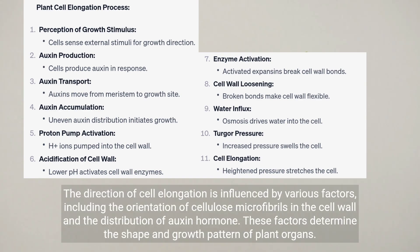The direction of cell elongation is influenced by various factors, including the orientation of cellulose microfibrils in the cell wall and the distribution of auxin hormone. These factors determine the shape and growth pattern of plant organs.